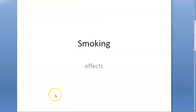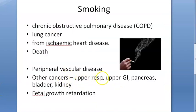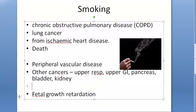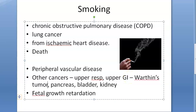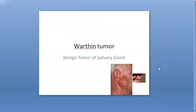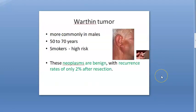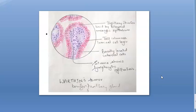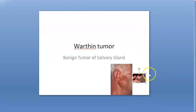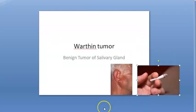Importantly, remember Warthin's tumor in pathology — it is a benign tumor of the salivary gland (parotid gland) associated with smoking in older men. This is a classic association worth remembering.